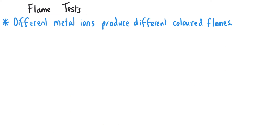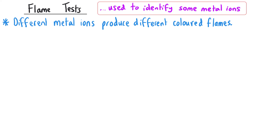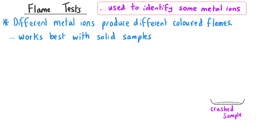During flame tests, different metal ions produce different coloured flames, and these are distinctive, so flame tests can be used to identify some metal ions. Flame tests work best with solid samples, but solutions can be used as well. If you're asked to write a method for a flame test, assume you're working with a solid sample — ideally one that has been crushed into a fine powder that is easy to stick to the equipment.